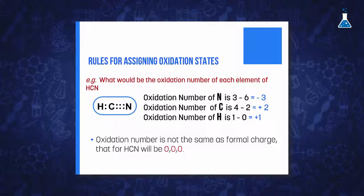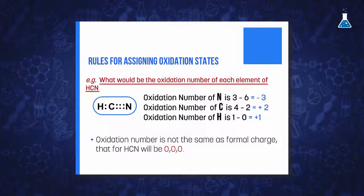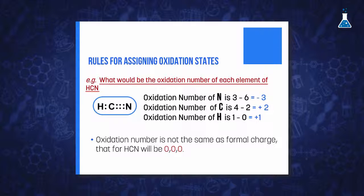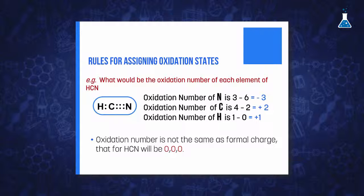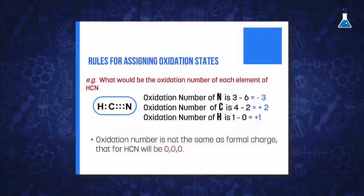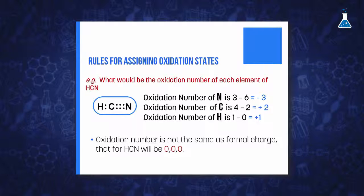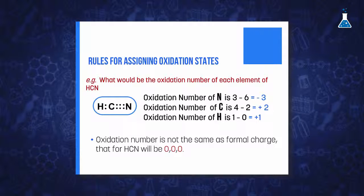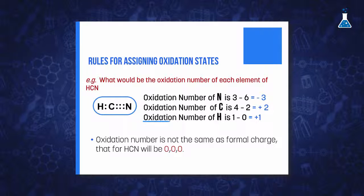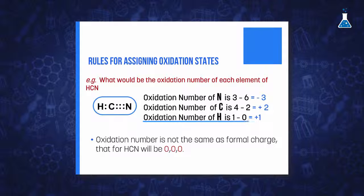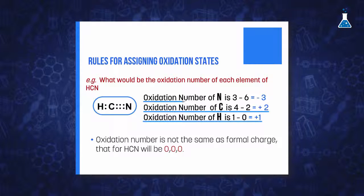For example, what is the oxidation number of each element in hydrogen cyanide? According to the simplified rules, answering this question would be impossible. But if we examine the electrons in the Lewis structure and consider that nitrogen is more electronegative than carbon, and carbon more than hydrogen, we can deduce that the oxidation state of hydrogen is 1+, carbon is 2+, and nitrogen is 3−.